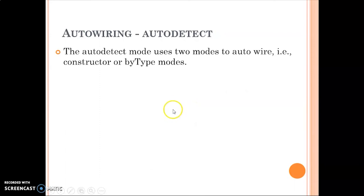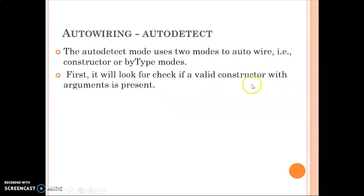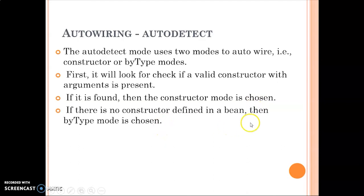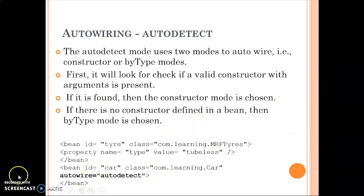The final XML mode is auto-detect. This automatically detects which mode to use — constructor or by type. First it checks if there is a valid constructor where each argument has a matching bean by type in the configuration file. If a valid constructor is found, constructor mode is chosen. If not, it falls back to by-type mode, resolving properties one by one. The attribute to use is autowire equals to 'autodetect'.